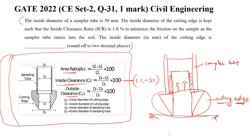You should be clear about the diameter notations: this is the inside diameter of the sampler tube, this is the outside diameter of the sampler tube, this is the inside diameter of the cutting edge, and this is the outside diameter of the cutting edge. Here they are denoted as: d1 = inner diameter of the cutting edge, d2 = outer diameter of the cutting edge, d3 = inner diameter of the sampler tube, d4 = outer diameter of the sampler tube.